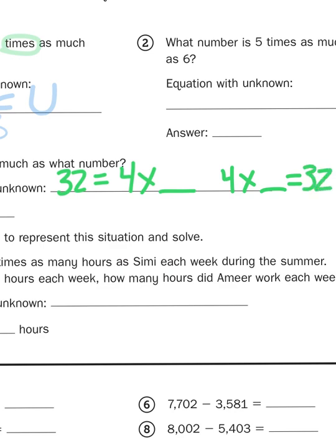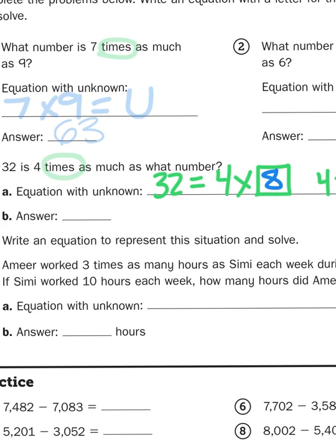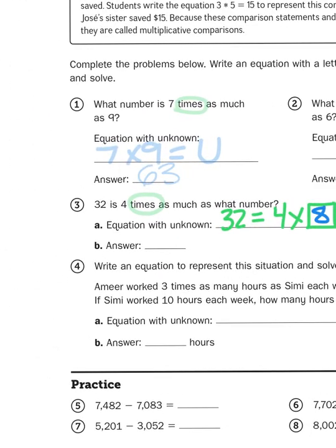When you have a multiplication problem with a missing factor, what you're really getting is a division problem. But we won't talk about that quite yet because we haven't gotten to division this year, have we? So let's think about our multiples. If I were to skip count by four, how long would it take me to get to 32? Well, 4, 8, 12, 16, 20, 24, 28, 32. Oh, I counted eight groups of four right there. So my missing number is eight. So my missing factor is eight. So hey, you just learned that 32 divided by four is eight. So maybe we do know a little bit about division after all.